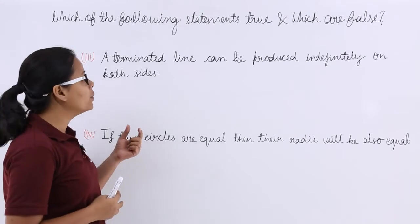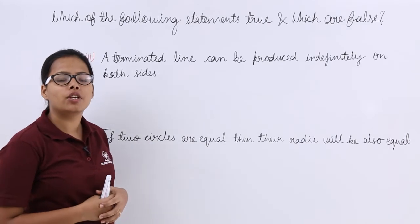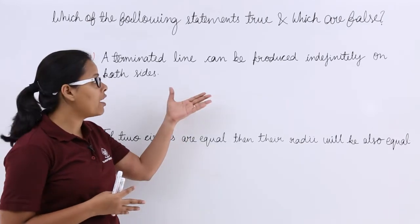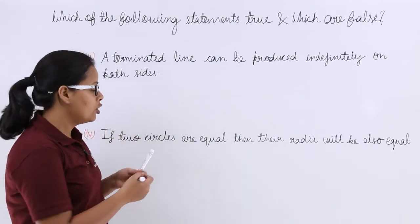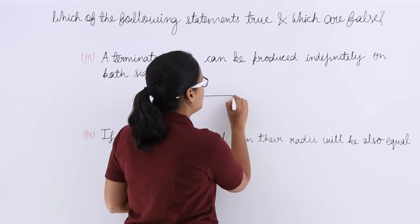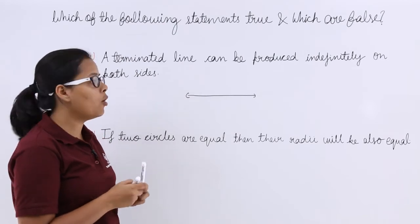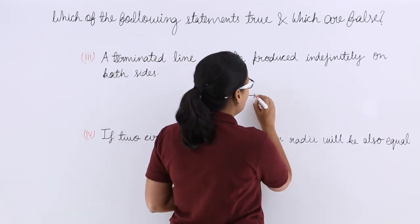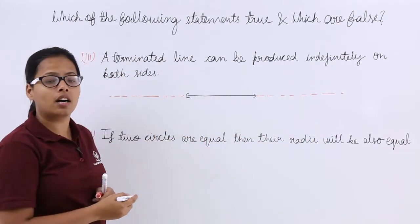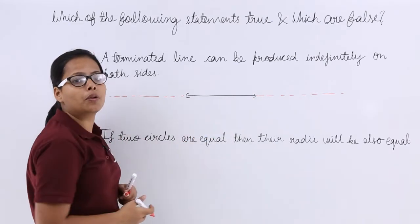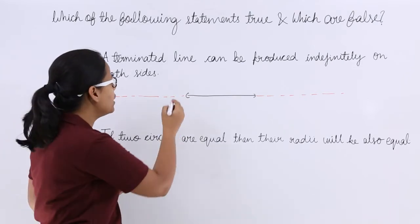Our third statement says a terminated line can be produced indefinitely on both sides. You can see our previous video lecture where I discussed postulate two — this is nothing but postulate two. So yes, a terminated line can be produced indefinitely on both sides, and the answer for this statement is true.